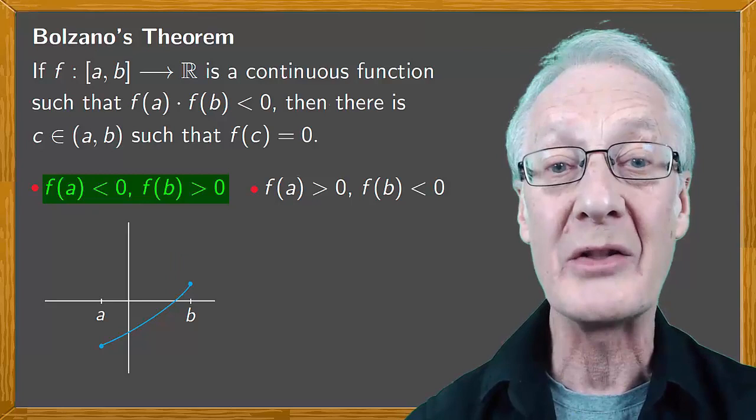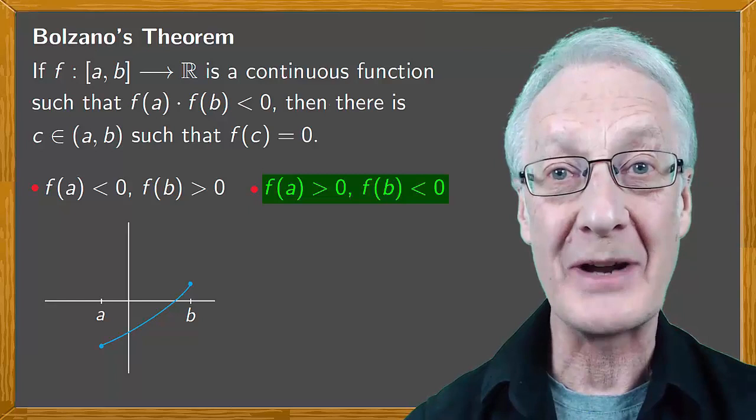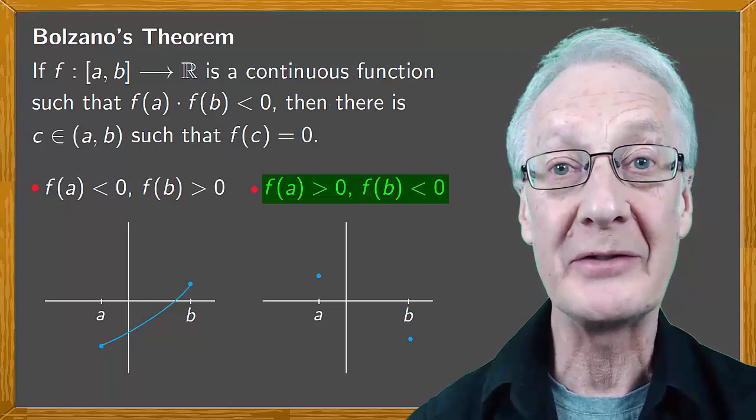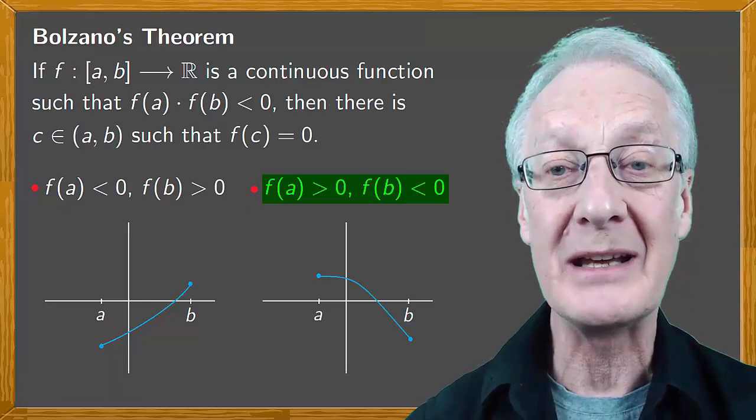In the second case where f(a) > 0 and f(b) < 0, the function has to go from positive to negative and again because of continuity there has to be a c within the interval where the function is zero.